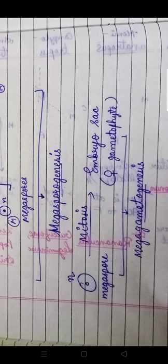The megaspore formed from meiosis is naturally haploid. It then undergoes mitotic division, so every cell formed from it will be haploid, and that forms an embryo sac — also known as the female gametophyte. The process of forming an embryo sac from the megaspore, or forming the female gametophyte, is known as megagametogenesis. Megagametogenesis means the megaspore develops by mitotic division to obtain more than one cell and more than one nucleus, and that whole structure is the embryo sac.